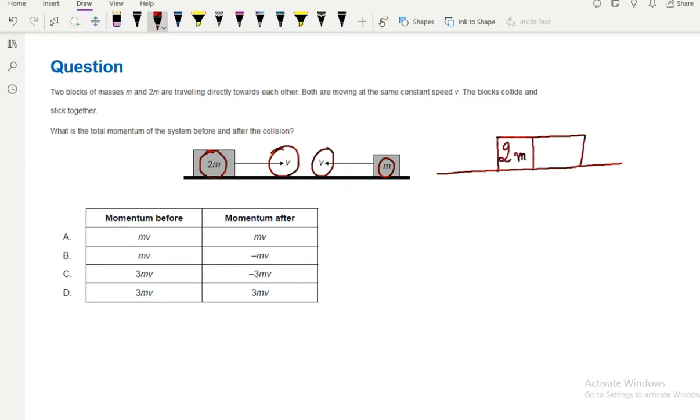Let's find the momentum before the collision. The momentum before, P initial, equals the momentum of each block. I'm gonna call this object block A, this is block B. Starting with block A, P initial A equals the mass of A which is 2M times V.